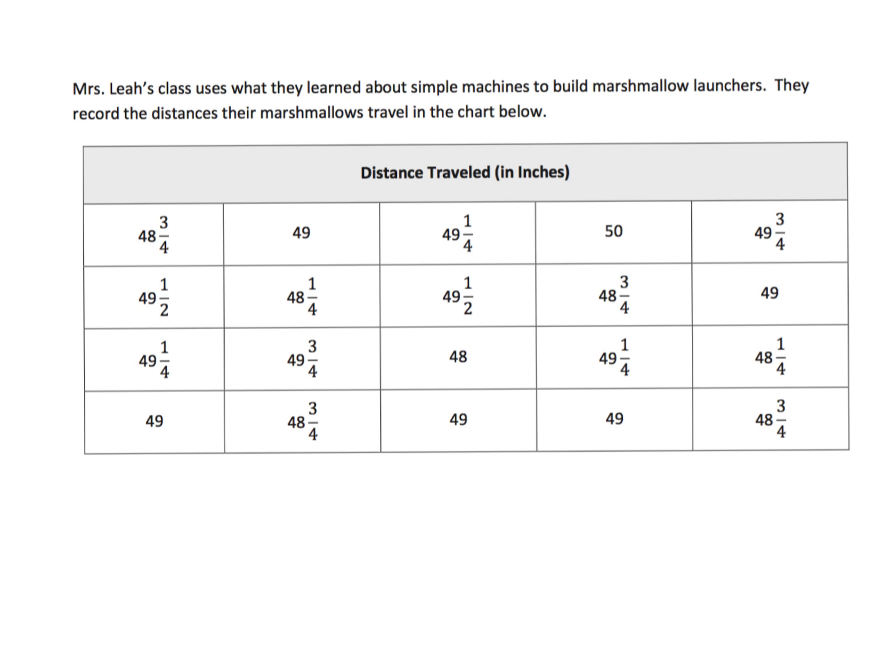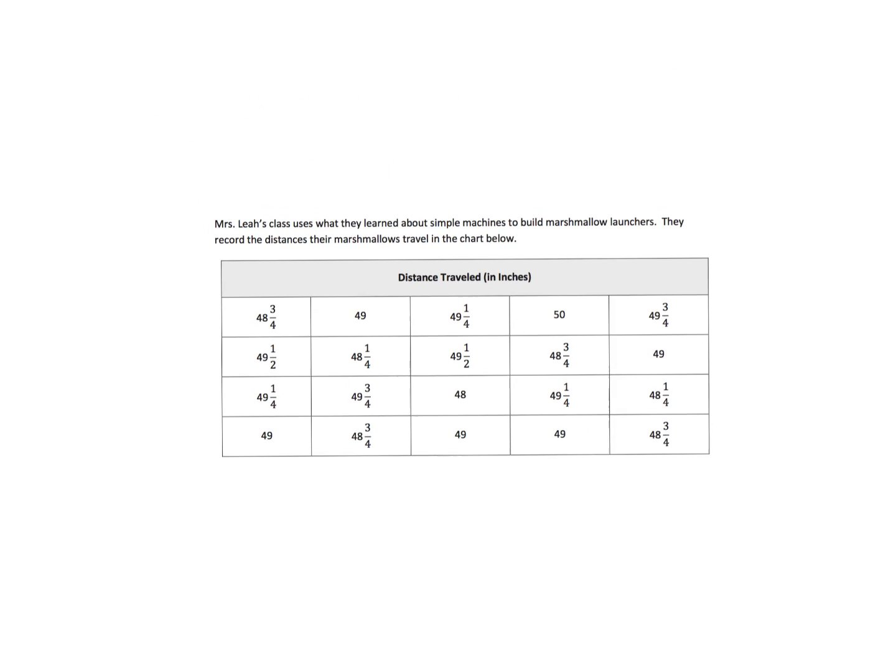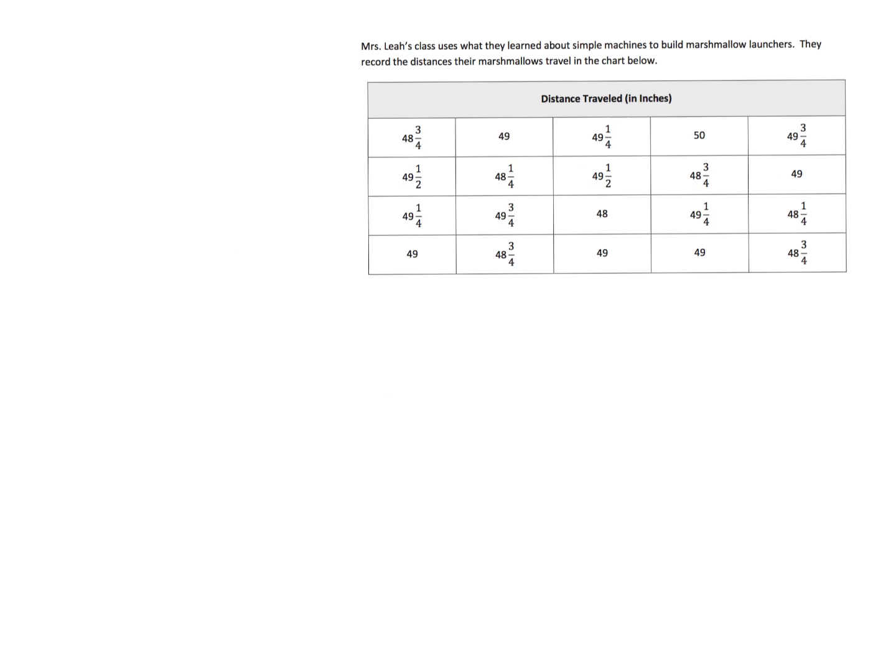These are all your different values, and we've got four rows times five, so there's 20 pieces of data. And the idea is now we're supposed to make our line plot. We're going to start by giving it a title, and the title is distance traveled.